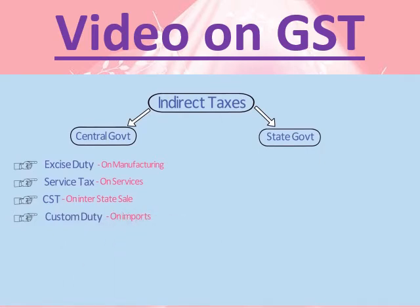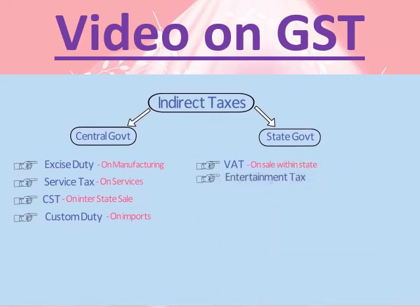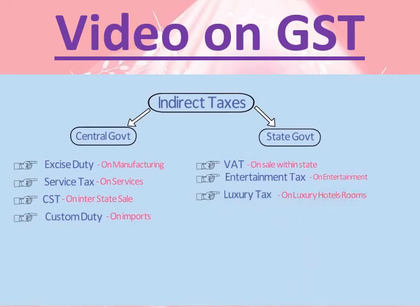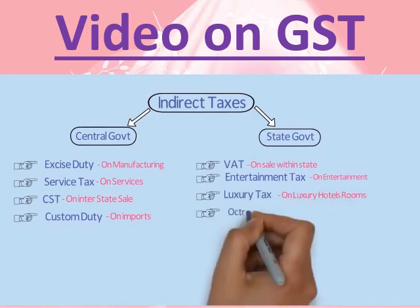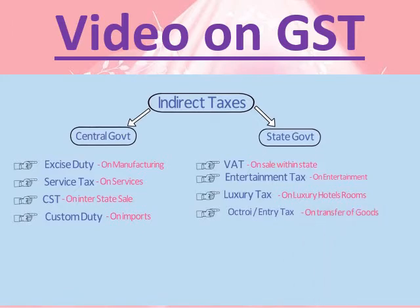Some major indirect taxes levied by the state government are: Value-added tax (VAT), charged when goods are sold within the state; Entertainment tax, imposed on various forms of entertainment such as movie tickets; Luxury tax, imposed on luxury hotel rooms; and Octroy or Entry tax — some state governments levy octroy when goods enter the state. This was a quick overview of major indirect taxes imposed by center and state.